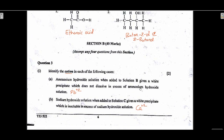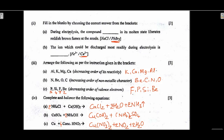Come to Section B — you can attempt any four questions but I have solved all of them so you can cross-check. Question 3: identify the cation. Ammonium hydroxide added to solution B gives a white precipitate which does not dissolve in excess ammonium hydroxide. Excess ammonium hydroxide forms a white precipitate soluble only for zinc; lead and calcium do not dissolve. Sodium hydroxide added to solution C gives a white precipitate insoluble in excess NaOH — both zinc and lead are soluble in excess NaOH, only calcium is not, so the answer is calcium.